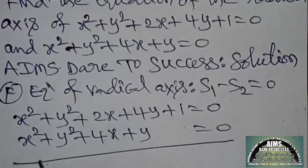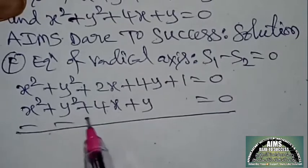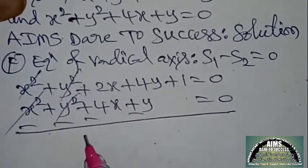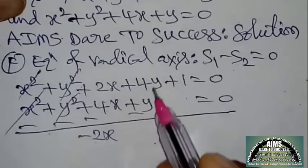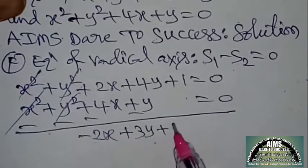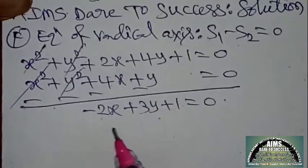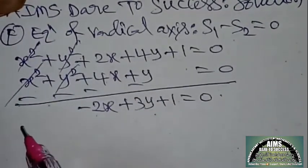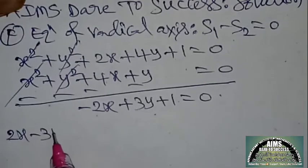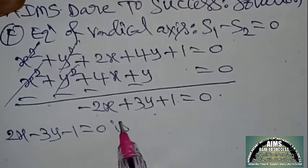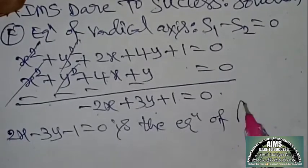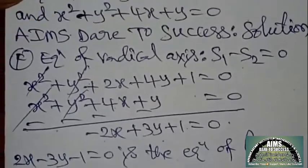The relation is minus. x² cancels, y² cancels. 2x − 4x = −2x; 4y − y = 3y; +1 remains. So −2x + 3y + 1 = 0. Taking minus common: 2x − 3y − 1 = 0 is the equation of the radical axis.